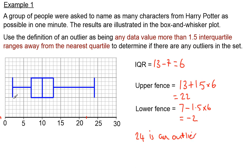So the lower value of 2 is fine, but the highest value of 24 is an outlier. There might be other outliers too, but without the raw data we can't determine that. Our next step would be to redraw our box-and-whisker diagram, marking any outliers we've found with a cross.